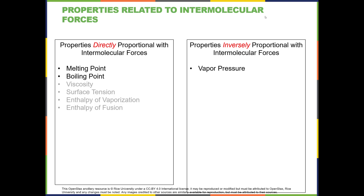Now we're going to look at some of the properties related to intermolecular forces. The properties we've already talked about that are directly proportional with intermolecular forces are melting point and boiling point. So as the intermolecular forces go up, the melting point and the boiling point go up.